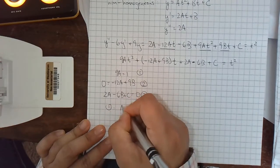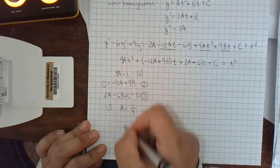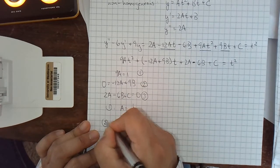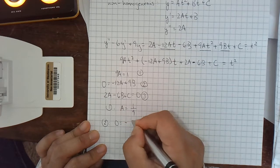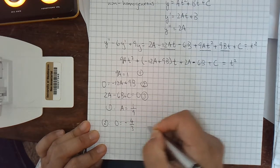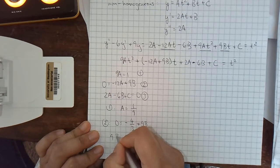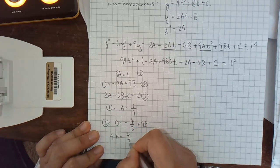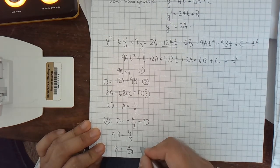So equation 1, I get a equals 1 ninth. This might be kind of ugly. Let's put that into equation 2. So 0 equals negative 12 times 1 ninth is negative 4 thirds plus 9b. So 9b equals positive 4 thirds. b is 4 27ths. All right.